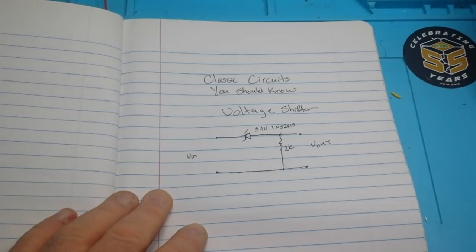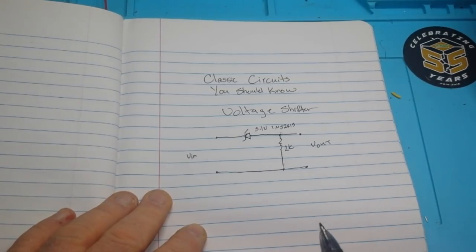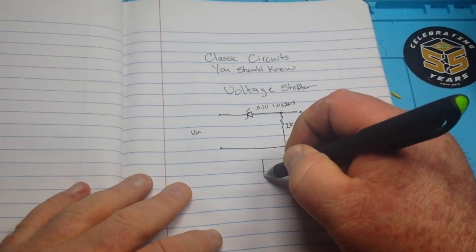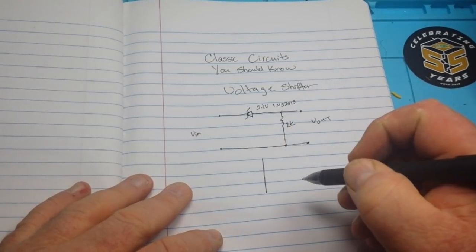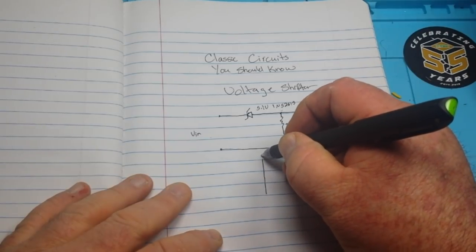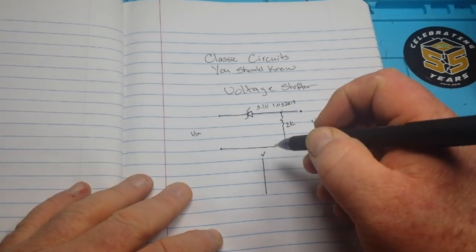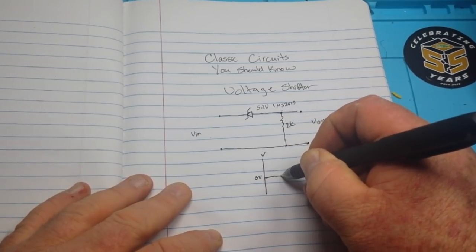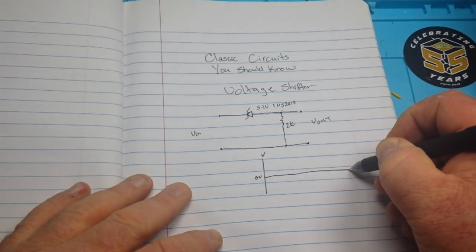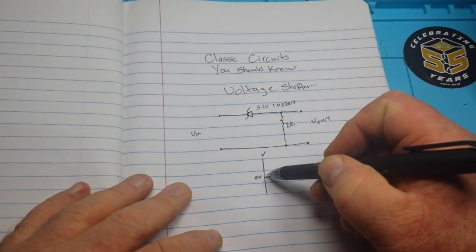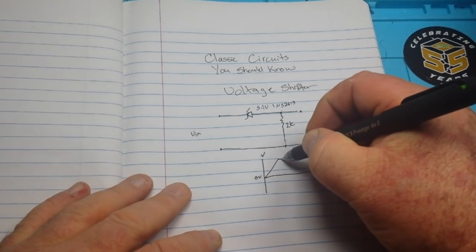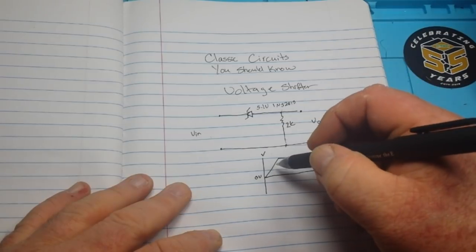What this circuit is going to do is it is going to shift your voltage by the breakdown voltage of the zener. So if we have a chart kind of like this, this is voltage here and we'll say this is zero volts, okay, and then here's our V in, kind of comes up like this.